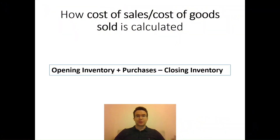So cost of goods sold, or the cost of sales figure, will be found in your comprehensive income statement, otherwise known as the income statement or the profit and loss statement. It comes directly beneath sales revenue and above gross profit. The calculation for gross profit is: sales revenue minus cost of goods sold equals gross profit. So how do we work out cost of sales?